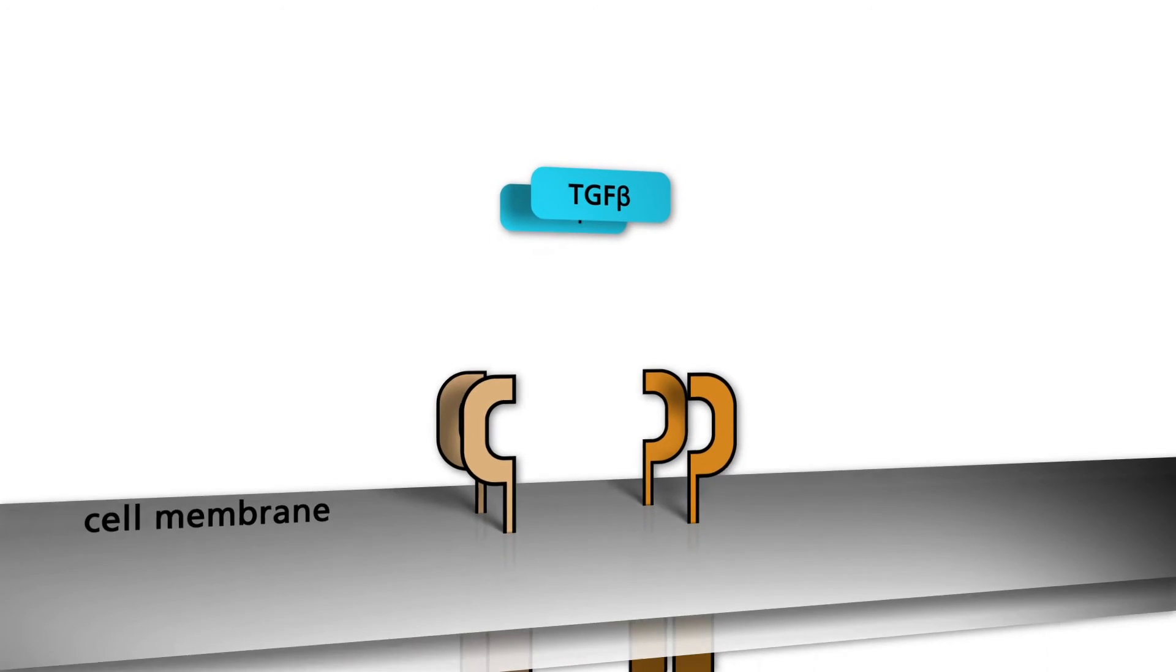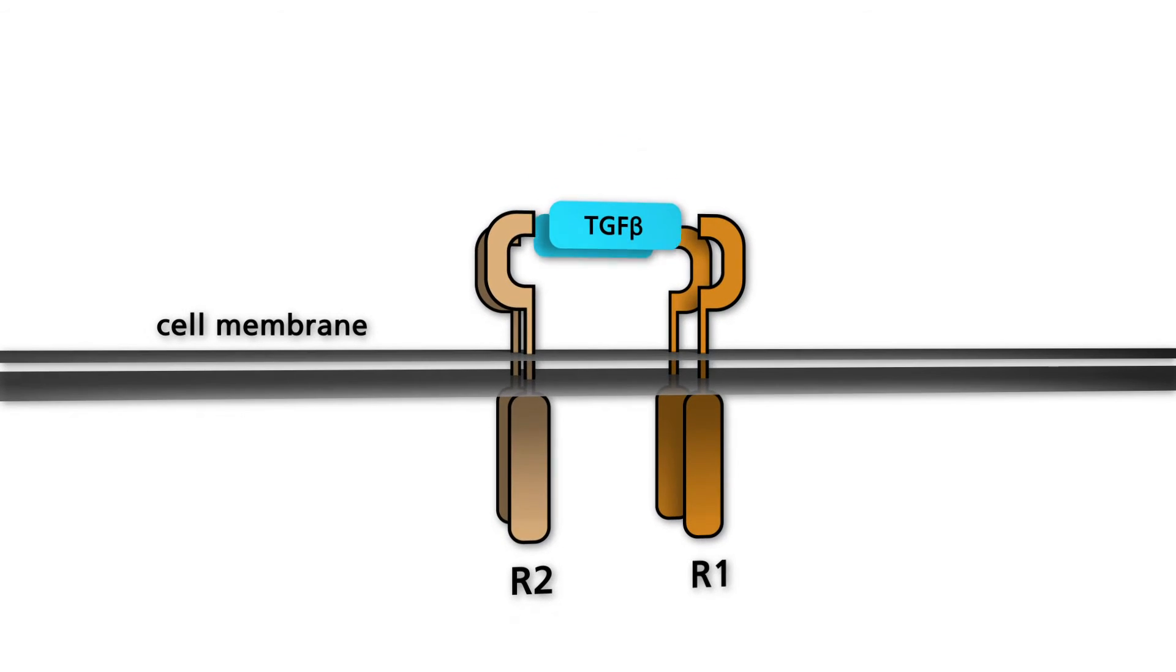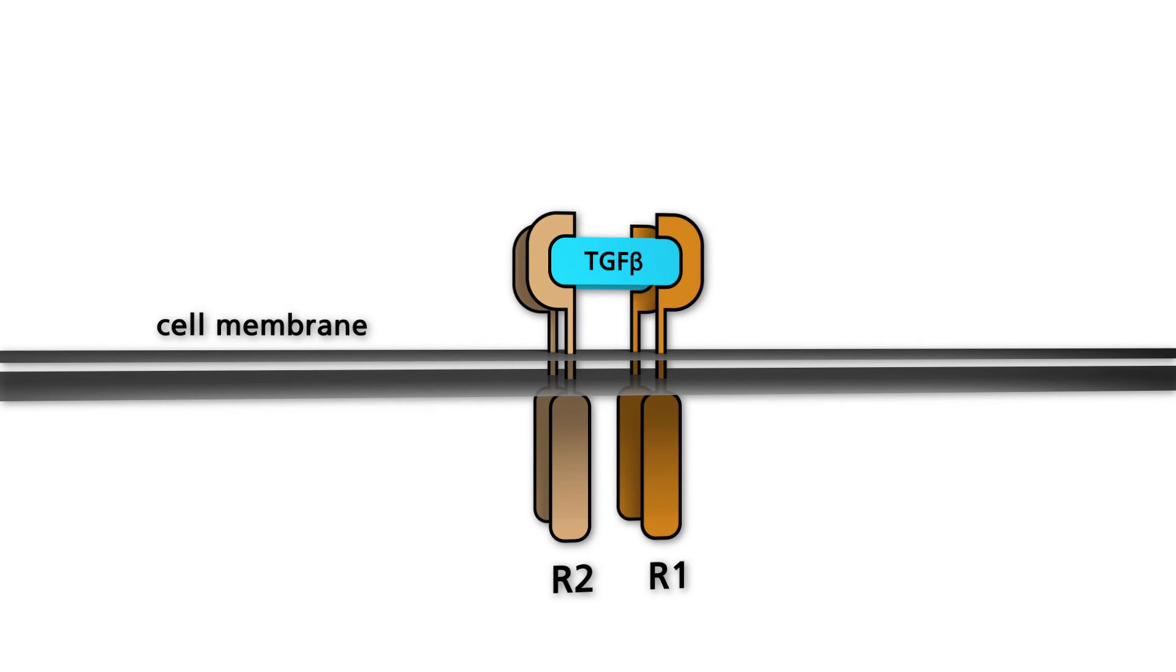Members of the TGF beta superfamily bind to two pairs of cellular receptors, referred to as type 1 and type 2. These two structurally similar receptor types are transmembrane serine threonine kinases.